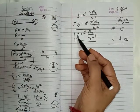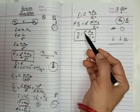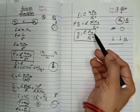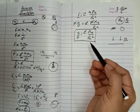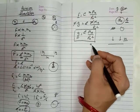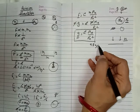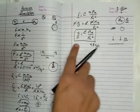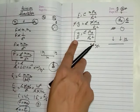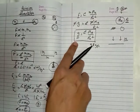We can find the value of g by putting the values of capital G, Me and Re square, and its value is approximately 9.8 meter per second square. This is the value of acceleration due to gravity produced by the earth.